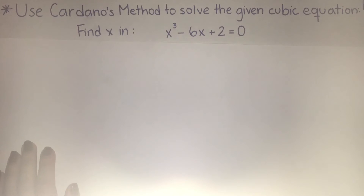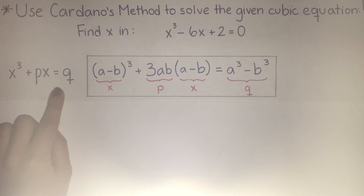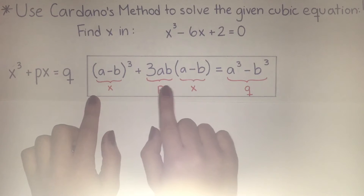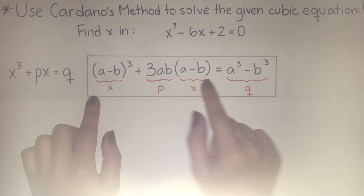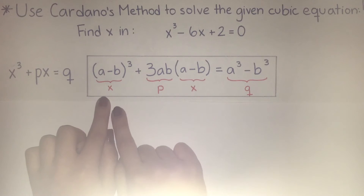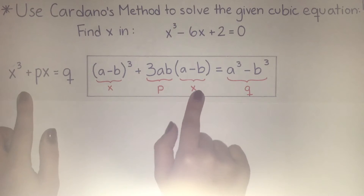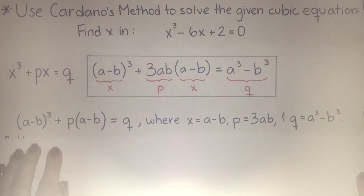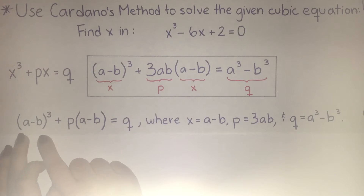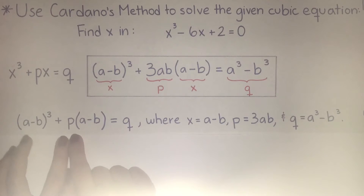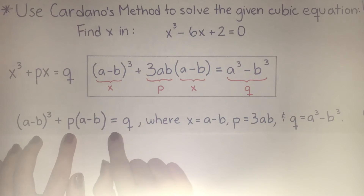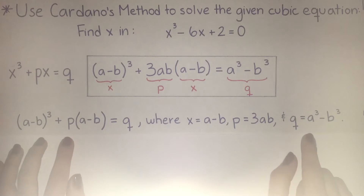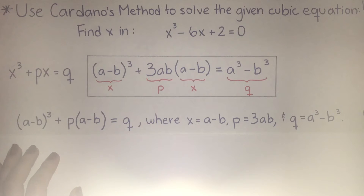Using Cardano's method, we know that an equation of this form — x cubed plus px is equal to q — can use this algebraic identity: (a minus b) cubed plus 3ab times (a minus b) is equal to a cubed minus b cubed, where x equals a minus b, p equals 3ab, and q equals a cubed minus b cubed. These are important values that we'll be using often.